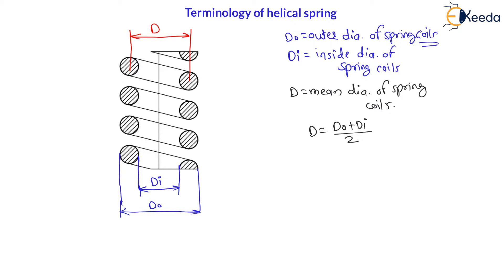As well as, the wire used has some diameter. Therefore, this dimension is called diameter of wire. This diameter of wire is represented by small d. Therefore, small d is called wire diameter — diameter of wire. All dimensions here I am considering in mm.